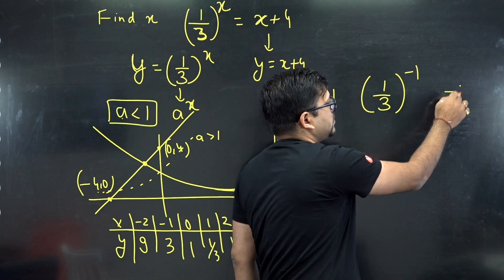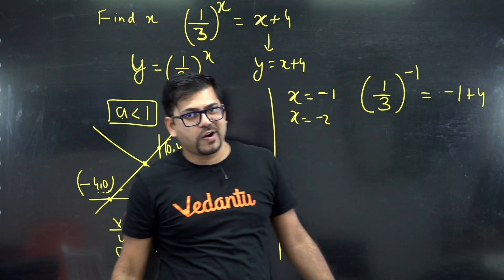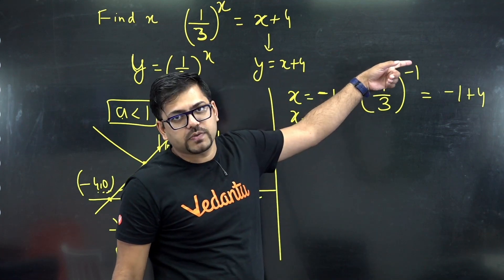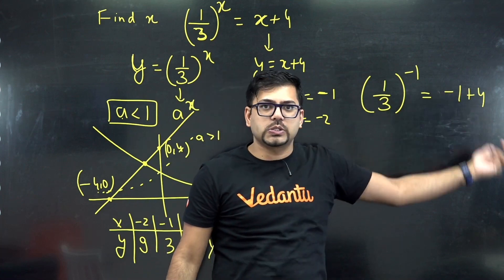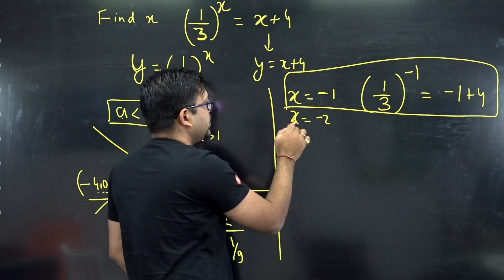You can write 1 by 3 raised to power minus 1 and here we have x plus 4, so we can write here minus 1 plus 4. So am I getting it equal? I guess yes, we have got it. So 1 by 3 raised to power minus 1 is 3 basically, and then 4 minus 1 is also 3. So yes, we have got the answer for x equals to minus 1. That's the solution for this question, x is equal to minus 1.